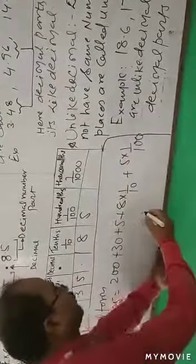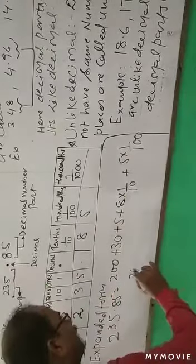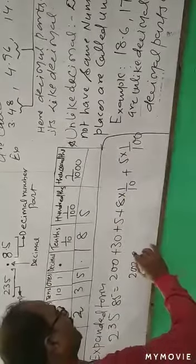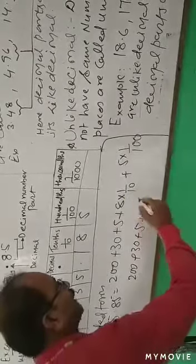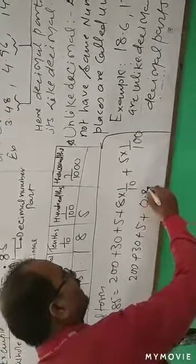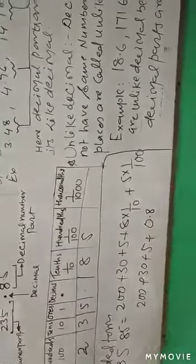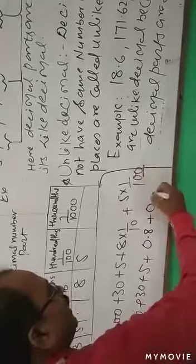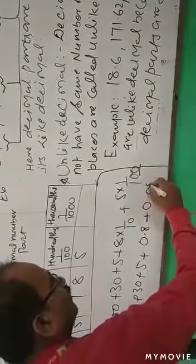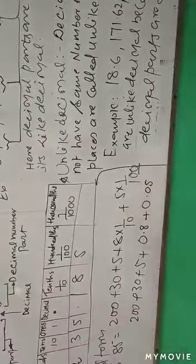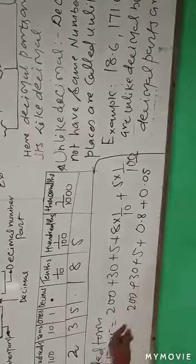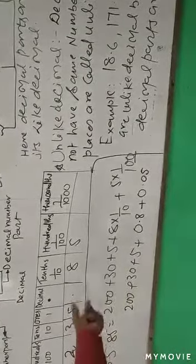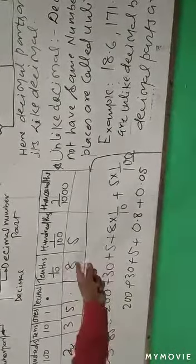So it could be converted: two hundred plus thirty plus five, plus 8 divided by 10 which gives 0.80, and if we divide 5 we get 0.05. Now if we add all of these together, we get two hundred thirty five point eight five.